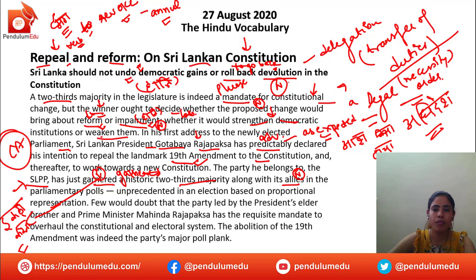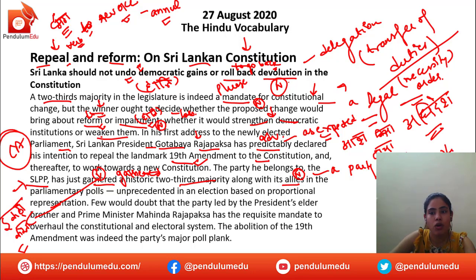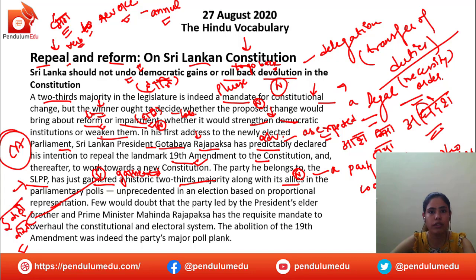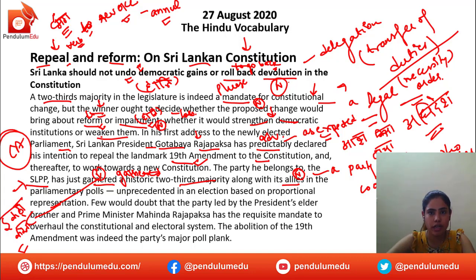Ally means a party or a nation — usually a country — who cooperates with another. For example, the US supports India, so US is an ally to India. China is not an ally to India as of now. So he garnered two-thirds majority along with his allies.